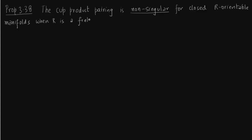So the cup product pairing which we just wrote on the previous slide, we say it is non-singular. As I mentioned before in the previous slide, just replace A and B with H^K and H^(N-K). So it is non-singular for closed R-orientable manifolds when R is a field or when R is integers and torsion is factored out.